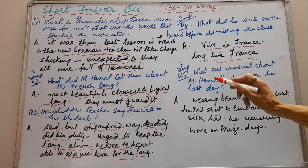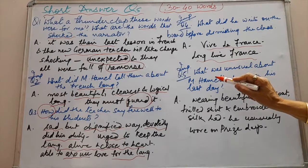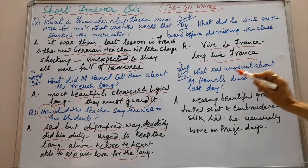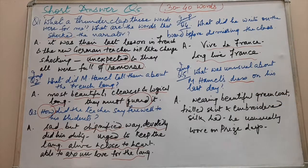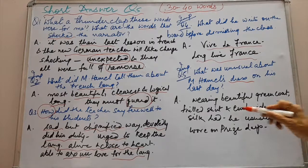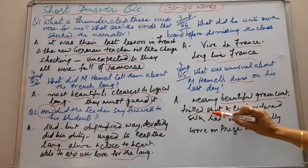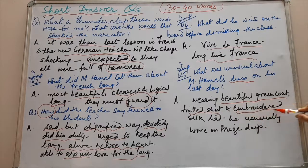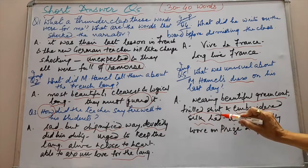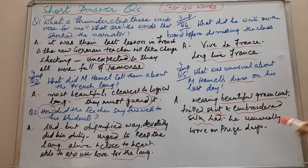There is another very important question expected in the board exam: What was unusual about M. Hamel's dress on his last day? On his last day he was dressed in a very dignified, formal way. He was wearing a beautiful green coat, a frilled shirt, and an embroidered silk hat — the dress he usually wore on prize days. You can elaborate these points on your own.